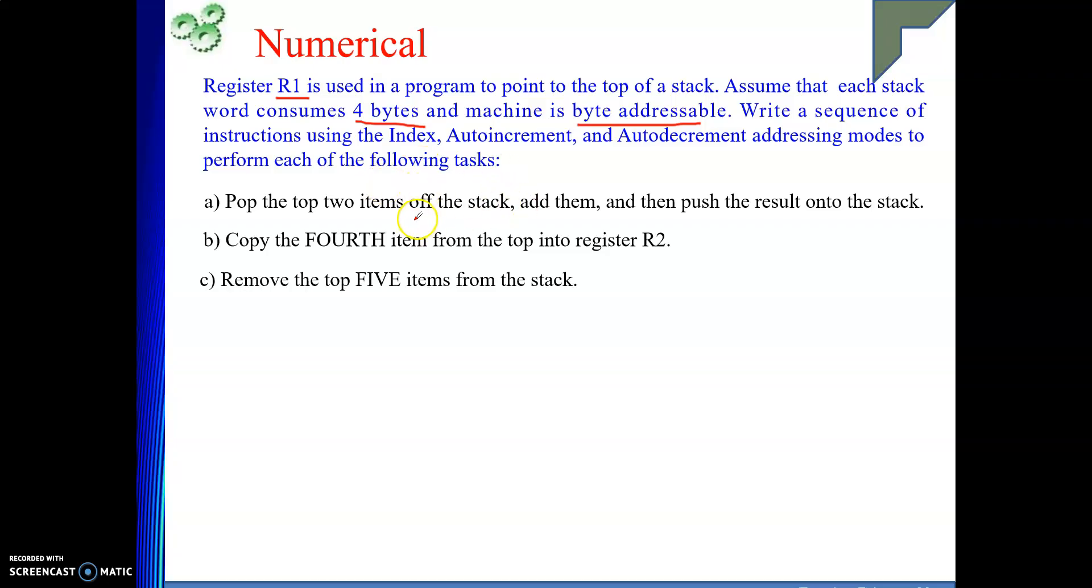So, to pop, whenever you are doing a pop operation, stack pointer will be incremented or decremented. It will be post-incremented. So, see, move R1 plus comma R5. So, R1 was my stack pointer. So, whatever is pointed by R1 is taken into R5, one register. Then I am adding the next element from the stack with R5. That means two top elements are popped. Then what I will do? Move R5 comma minus R1. That means the result will be stored back onto the stack. This is done.